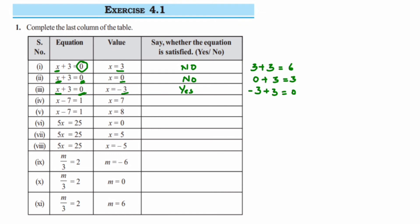Then next, x is equal to 7. When you substitute here, it's like 7 minus 7, which is 0. But here they have given it's 1, so this is not an equation. Next, x is equal to 8, so 8 minus 7 is 1, and on RHS we have 1, so this is an equation, yes.